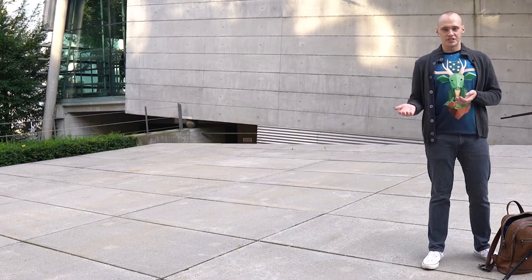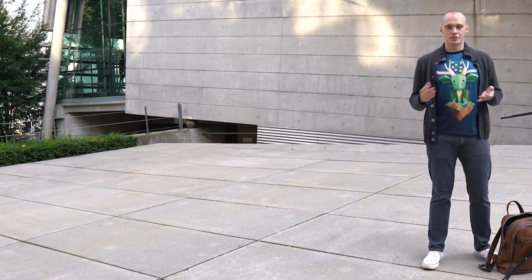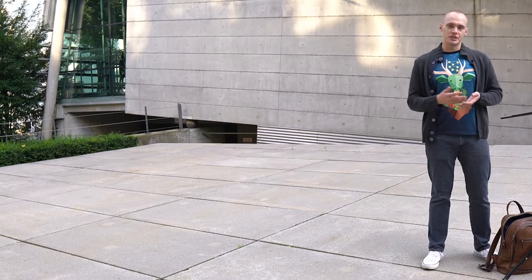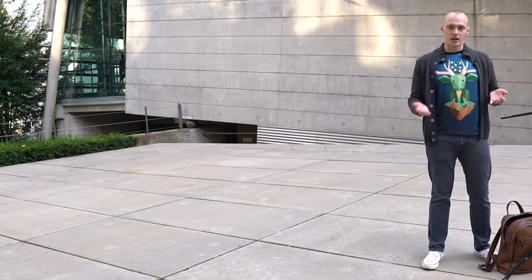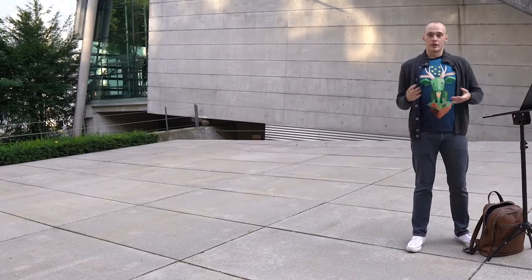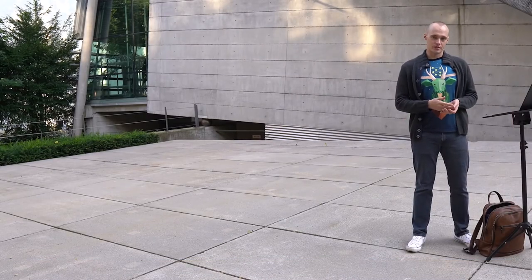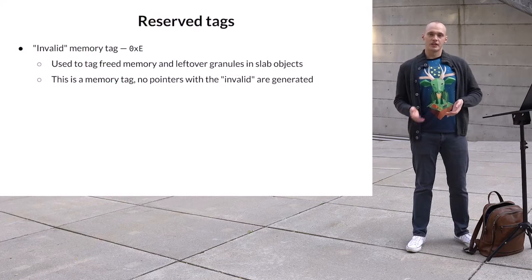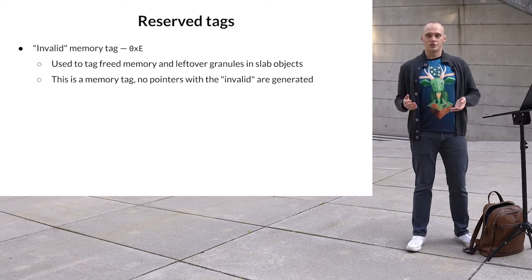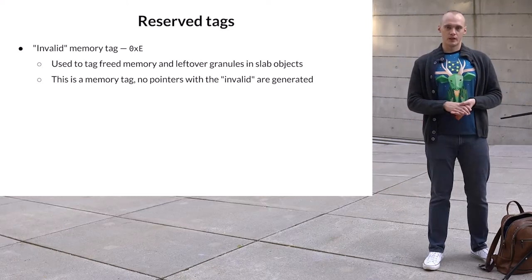So this is how MTE-based KASAN prevents out-of-bounds and use-after-free accesses. In some cases MTE has a chance of missing the bug. However, for the main types of memory corruptions, MTE catches them with high probability. Let's take a closer look at a few implementation details. I mentioned that KASAN has a reserved invalid tag for marking inaccessible memory with value E. Besides E, there is another tag value with a special meaning, and that is F.